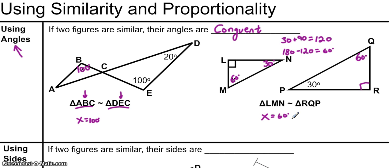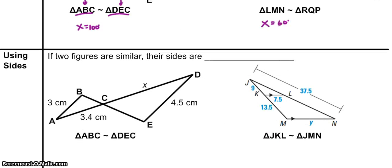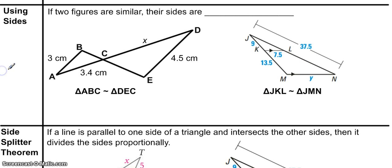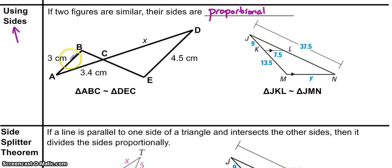Next, let's take a look at how we can use sides to solve similar geometric problems. If two figures are similar, then their sides will be proportional. This means that the ratio between any two corresponding sides will be the same as the ratio of any other two corresponding sides.